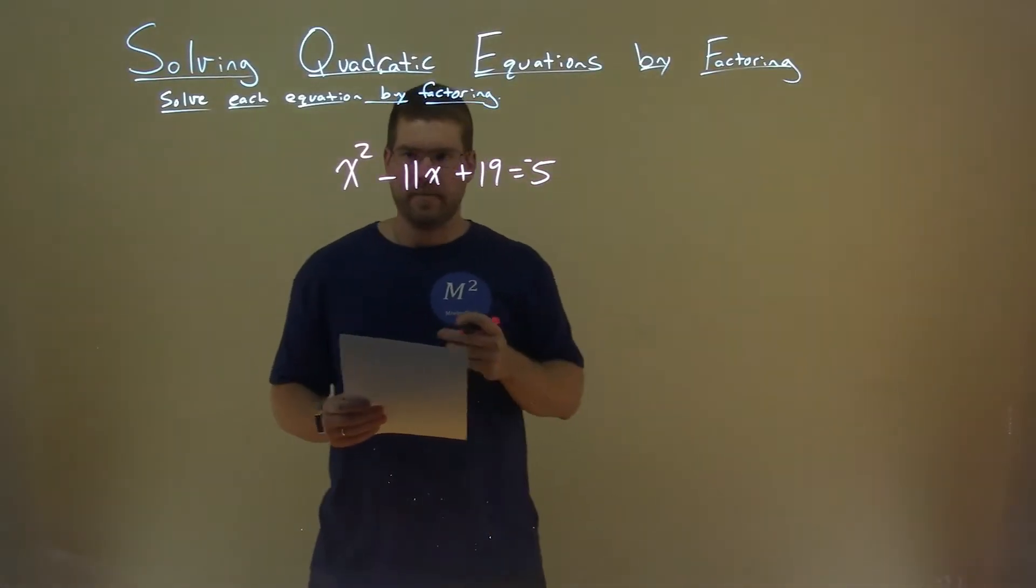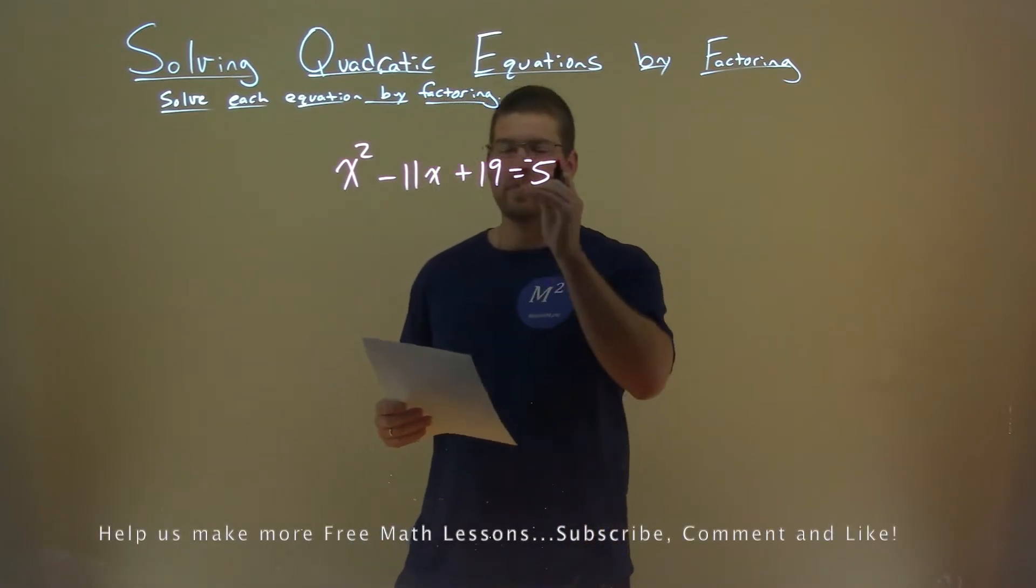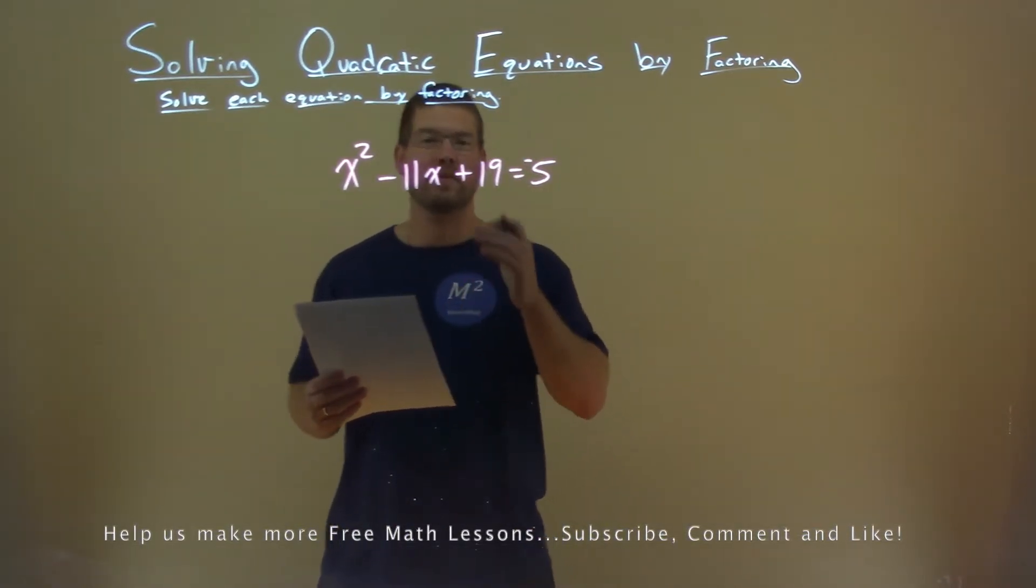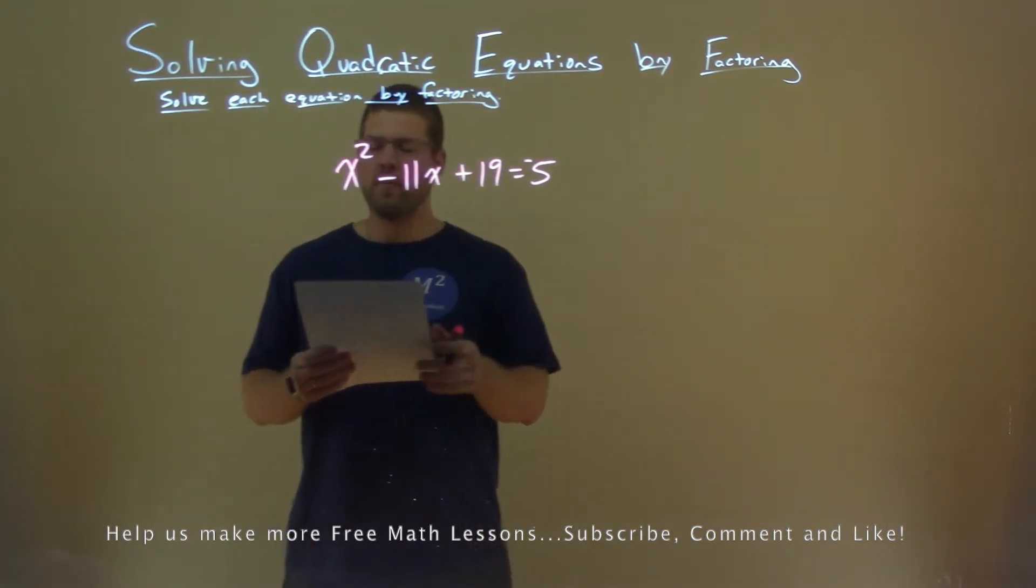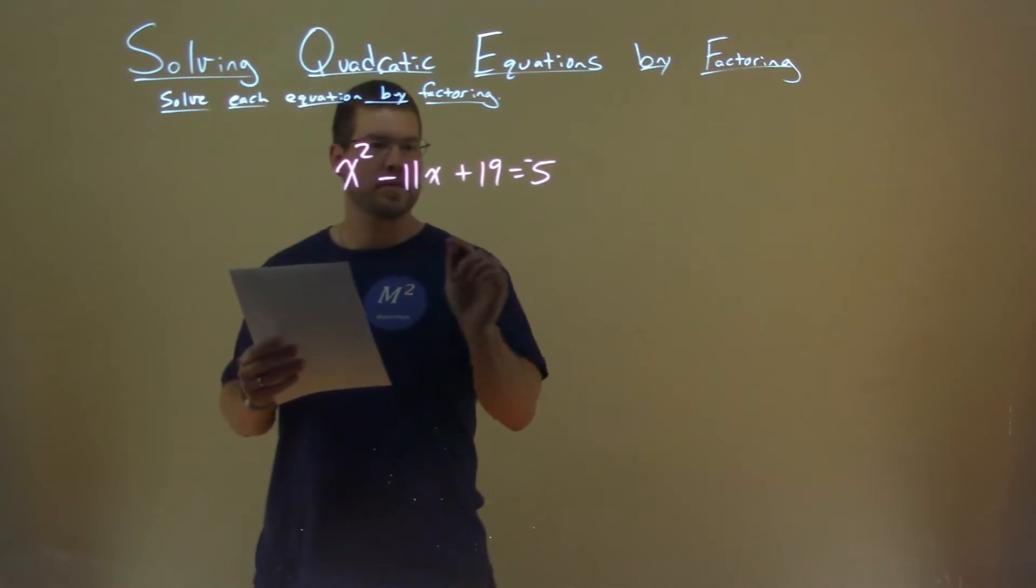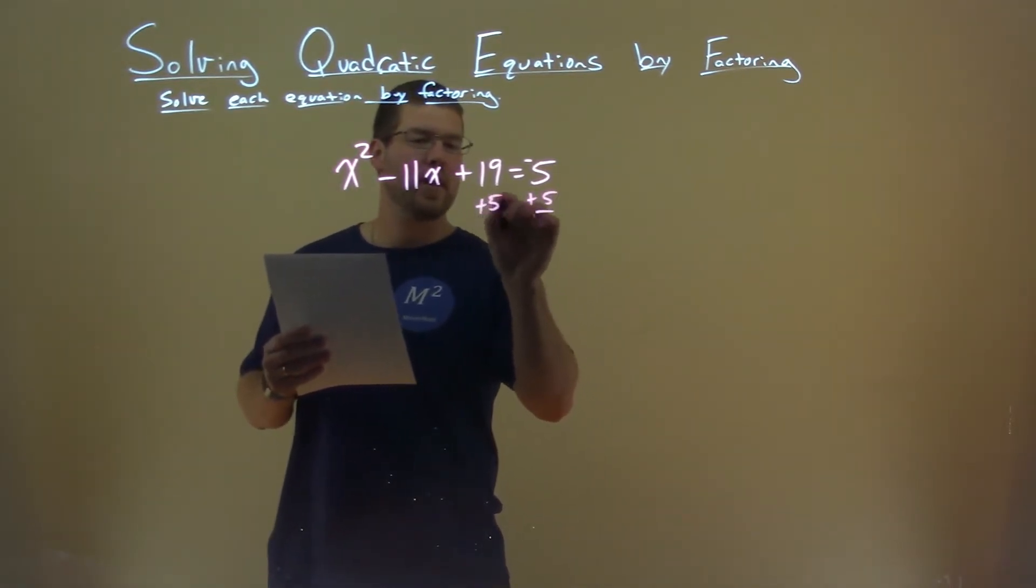We're given this problem right here x squared minus 11x plus 19 equals negative 5 and we want to solve this by factoring. Well first thing I need to do is I need to bring this negative 5 over to the other side. So I'm going to add a 5 to both sides.